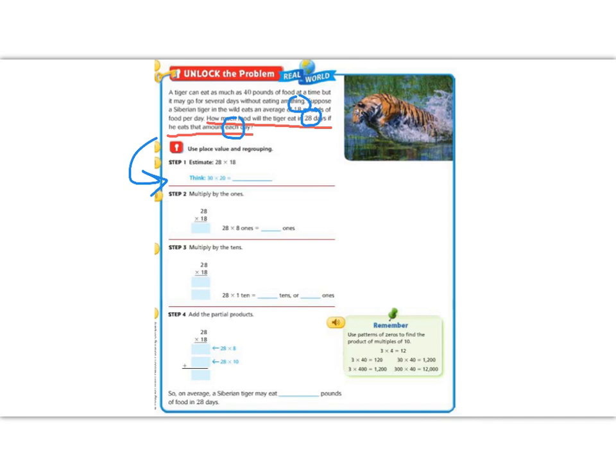We're going to round 28 to 30 and 18 to 20 to give us a nice easy number to estimate. If we pull out our basic fact out of this problem, 3 times 2 is 6, and then both 30 and 20 have a zero, so we're going to add both zeros onto our estimate. So 20 times 30 is going to be about 600. So we predict that a tiger can eat about 600 pounds of food in 28 days.